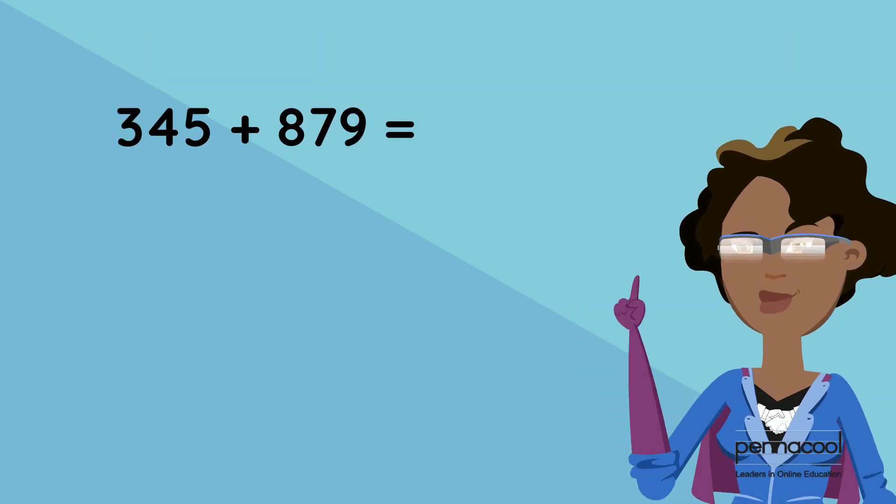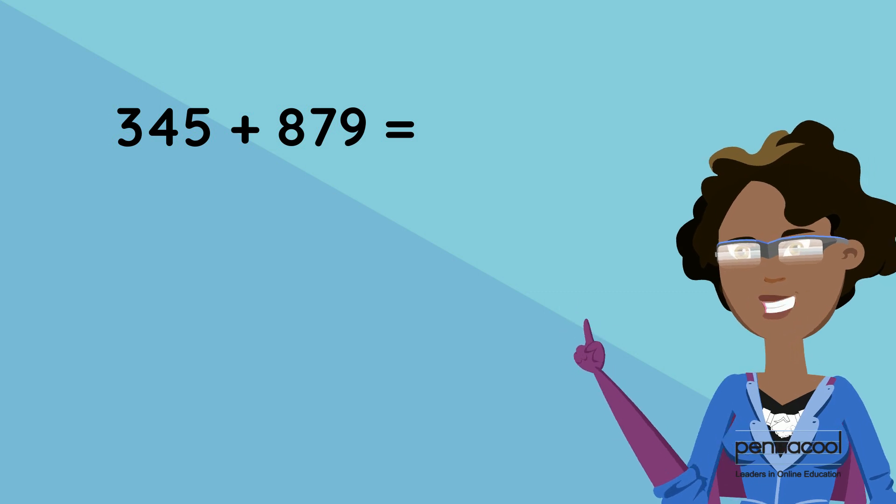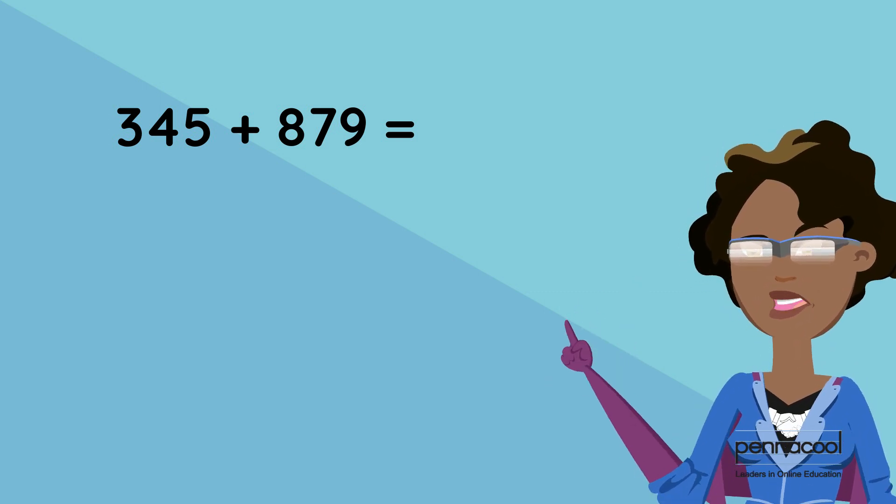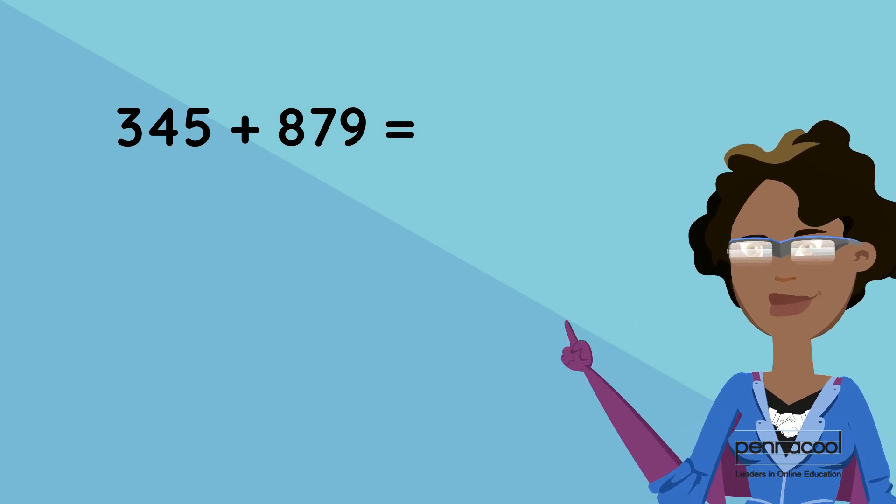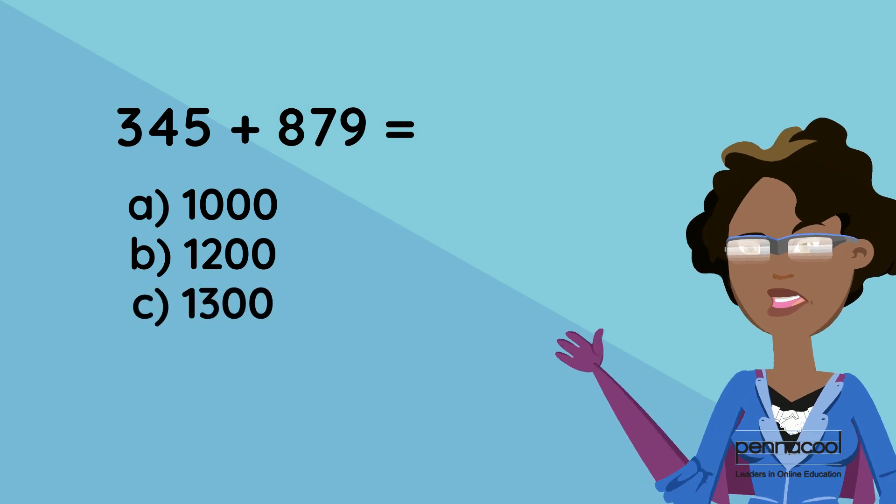Let's do an example. Let's round each number to the nearest hundred and then we'll estimate the sum of 345 and 876. Would our answer be A, B, C, or D?